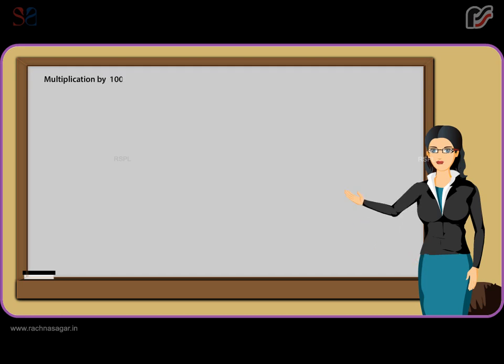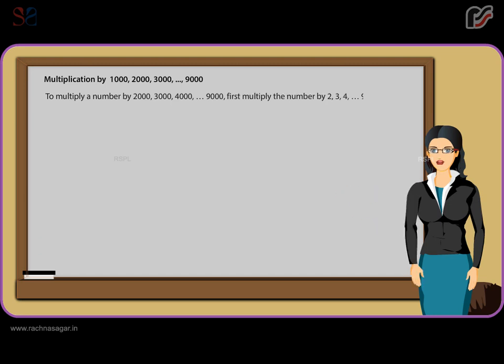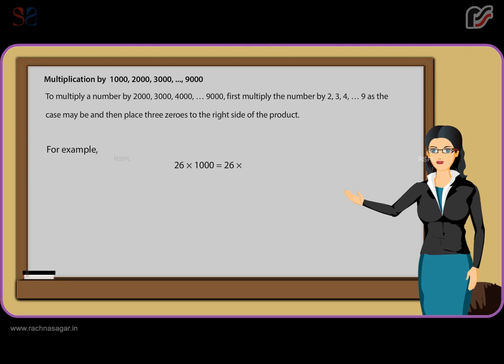Multiplication by 1000, 2000, 3000, 9000. To multiply a number by 2000, 3000, 4000 or 9000, first multiply the number by 2, 3, 4 or 9 as the case may be, and then place three zeros to the right side of the product. For example, 26 x 1000 is equal to 26,000.